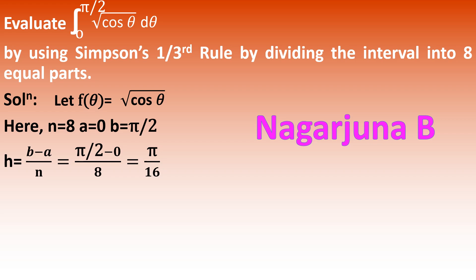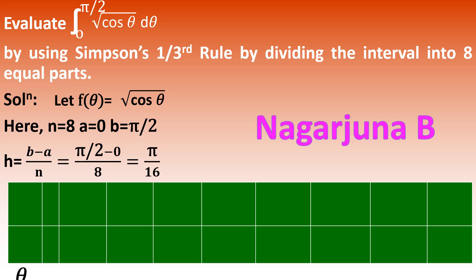Do not write π as 3.142 — write it as π itself. Now prepare a table consisting of θ and f(θ) values. The first value of θ should be the lower limit, which is 0. The next value will be 0 + h = 0 + π/16 = π/16. The next value will be π/16 + π/16 = 2π/16, which you can simplify to π/8.